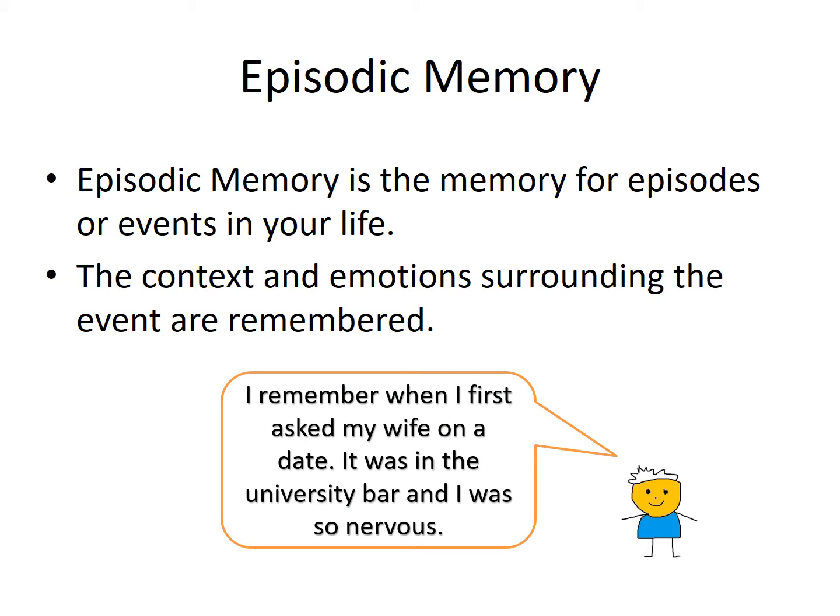Episodic memory is the memory for episodes or events in your life. The context and emotions surrounding the event are remembered, and the memory is quite detailed. For example, a person might remember the first time they met their wife or husband.